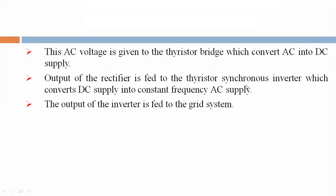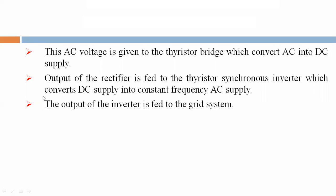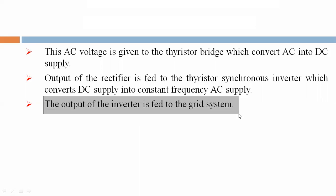The output of the rectifier is fed to the thyristor synchronous inverter, which converts DC supply into constant frequency AC supply. The output of the inverter is then fed to the grid system.